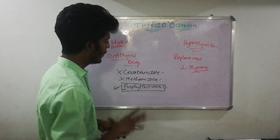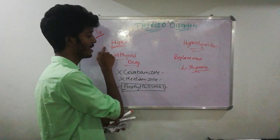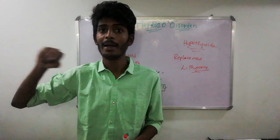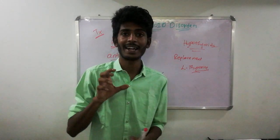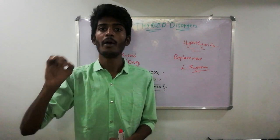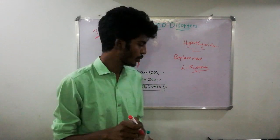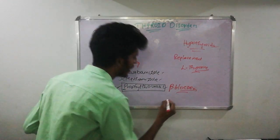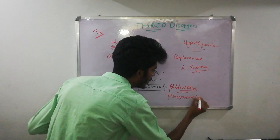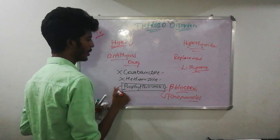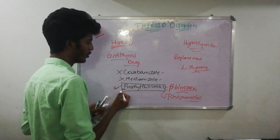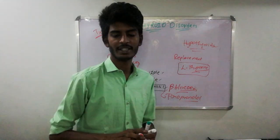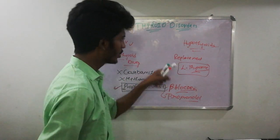We also need to treat tachyarrhythmia and tachycardia caused by elevated metabolism in hyperthyroidism. Hyperthyroidism patients can develop atrial fibrillation. For both tachyarrhythmia and atrial fibrillation, we use a beta blocker. The beta blocker of choice for hyperthyroidism is propranolol. Beta blockers should be added alongside propylthiouracil, or carbimazole or methimazole. In hypothyroidism, the treatment remains replacement therapy with levothyroxine.